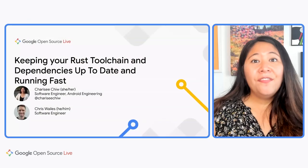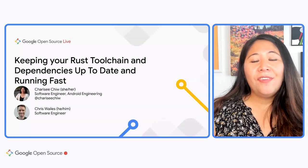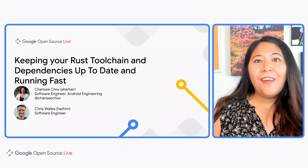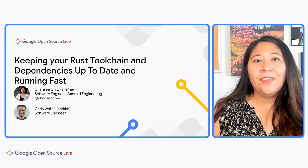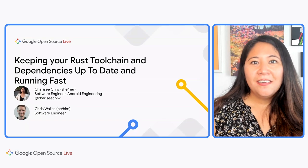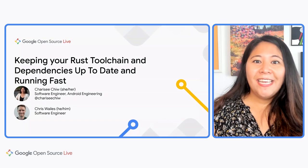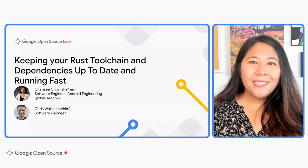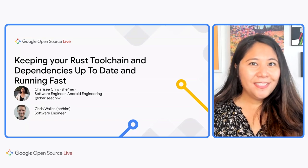Hi, I'm Sharice Chu. I work on the Rust toolchain alongside Chris Wales on Android. The focus of our team is to keep the Rust toolchain up to date with upstream Rust, providing Android developers with a reliable codebase and compiler. In our talk today, we'll discuss why keeping an up-to-date toolchain is useful and how we do it.